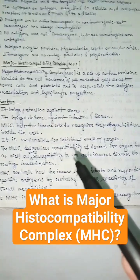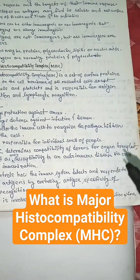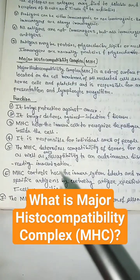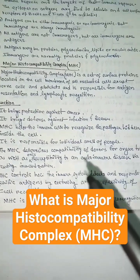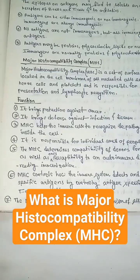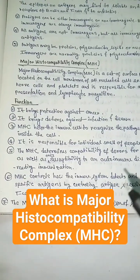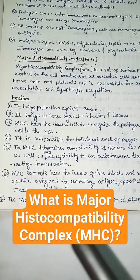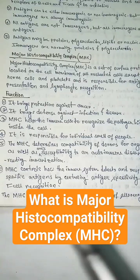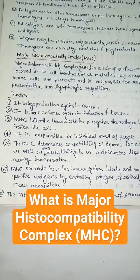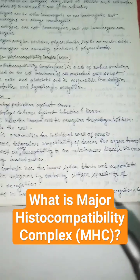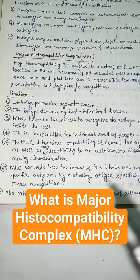The MHC determines compatibility of donors for organ transplant, as well as one's susceptibility to an autoimmune disease via cross-reacting immunization. MHC controls how the immune system detects and responds to specific antigens by controlling antigen specificity of T-cell recognition.